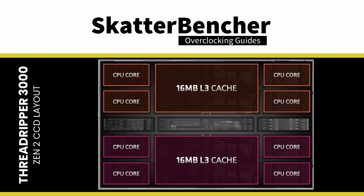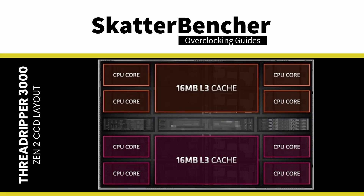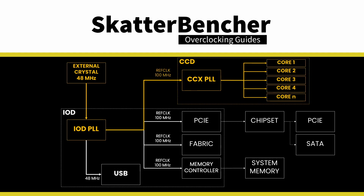CCD stands for Core Chiplet Die and is the die on the Ryzen CPU that contains CPU cores. The Zen 2 CPU cores are packed together in what's called a CCX, or Core Complex. A Zen 2 CCX consists of up to 4 individual cores, each with its own L1 and L2 cache, and a shared 16 MB of L3 cache. Two CCXs are packed together inside a CCD, effectively packing 8 Zen 2 CPU cores in one die. The frequency of the CPU cores is driven by a 100 MHz reference clock input.